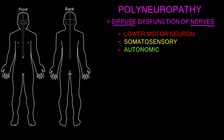Disorders that cause polyneuropathy may affect the nerves in different ways. They may affect the myelin more than the axons, or they may affect the axons more than the myelin, or they may affect both. We often divide polyneuropathies into whether they're mainly demyelinating — affecting the myelin — or mainly causing axonal loss, affecting the axons.